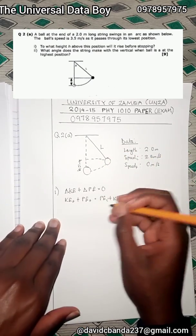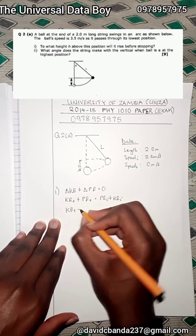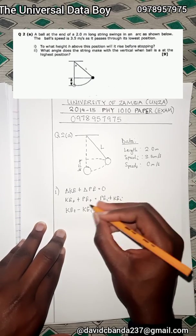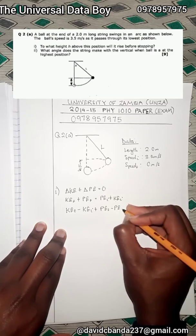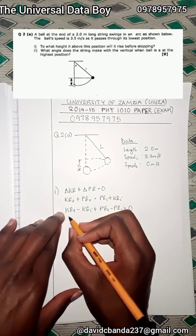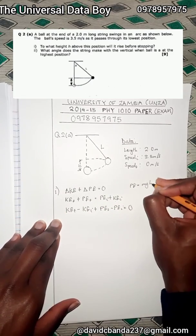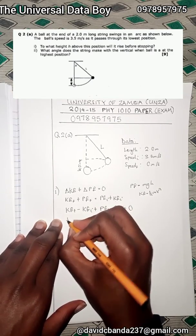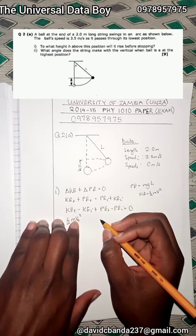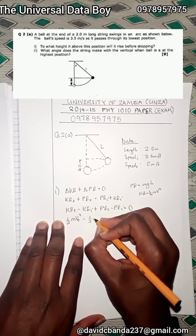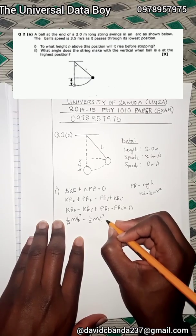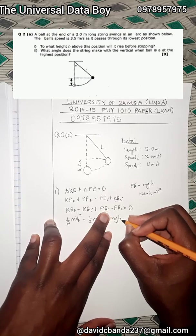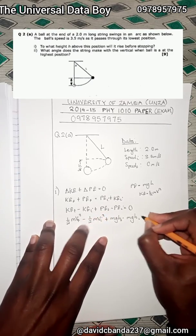Writing it out as changes: (KE final minus KE initial) plus (PE final minus PE initial) equals zero. Substituting PE = mgh and KE = ½mv², we get: ½mv_f² minus ½mv_i² plus mgh_f minus mgh_i equals zero.